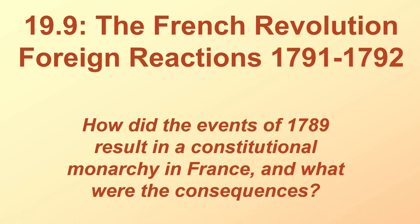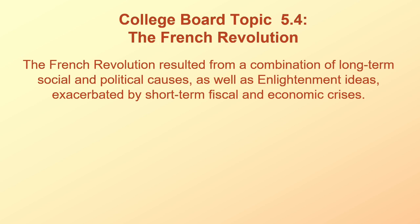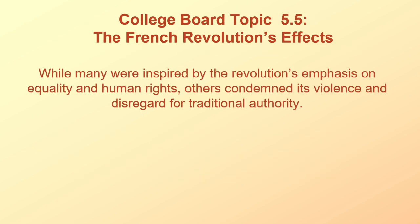We're getting there in this mad rush to get to the republic. We don't have too far left to go. How did the events of 1789 result in a constitutional monarchy in France and what were the consequences? And we're still on College Board Topic 5.4, French Revolution, explaining the causes, events, and consequences of the French Revolution.